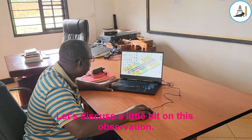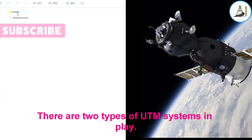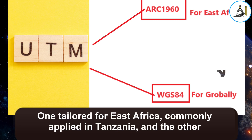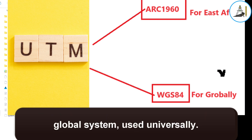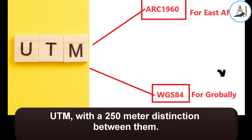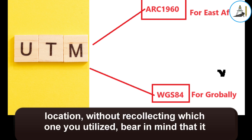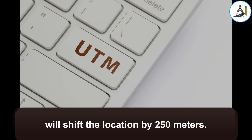Let's discuss this observation a little. There are two types of UTM systems in play: one tailored for East Africa, commonly applied in Tanzania, and the other a global system used universally. Both go by the name UTM, with a 250-meter distinction between them. If you use the East African UTM for planning and later seek your location without recollecting which one you utilized, bear in mind that it will shift the location by 250 meters.